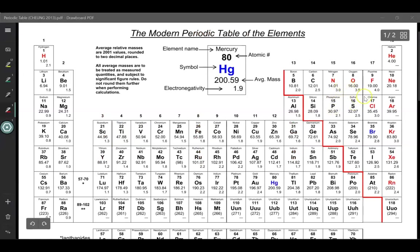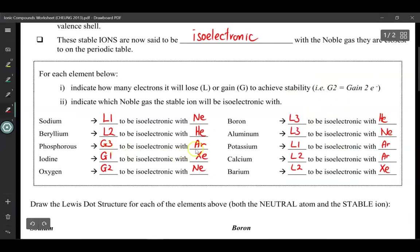Phosphorus can gain 3 electrons, 1, 2, 3, in order to become argon, or can lose 5, 1, 2, 3, 4, 5 to become neon, obviously it's easier to gain 3. So gain 3, become argon.